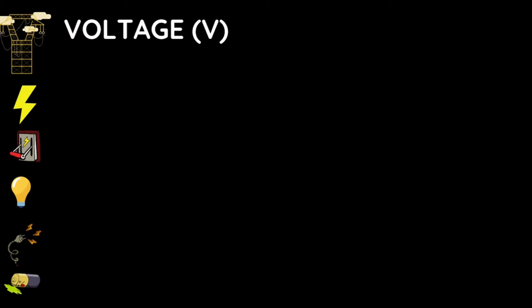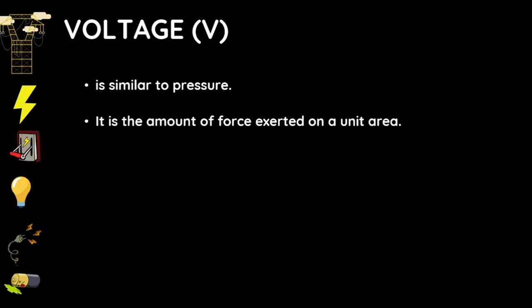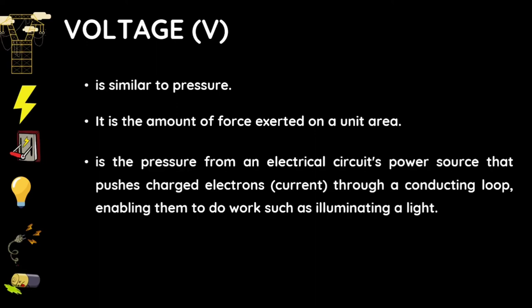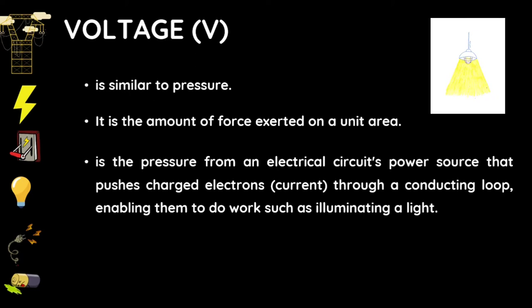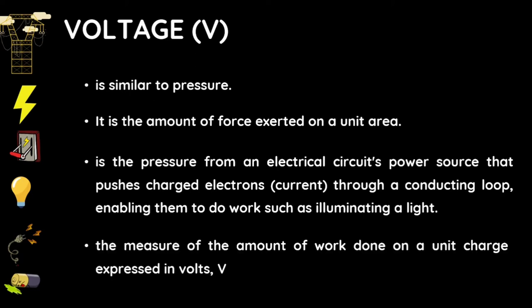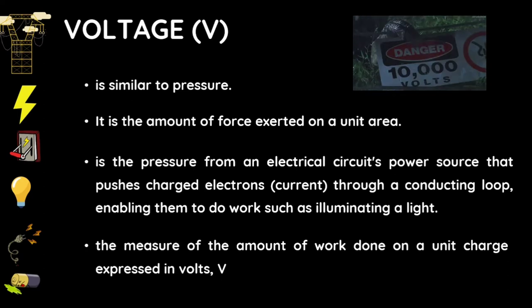Next is voltage. Voltage is similar to pressure — it is the amount of force exerted on a unit area. Voltage is the pressure from an electrical circuit's power source that pushes charge electrons or current through a conducting loop, enabling them to do work such as illuminating a light. Voltage is the measure of the amount of work done on a unit charge, expressed in volts, written as capital letter V.